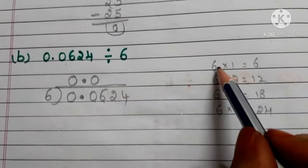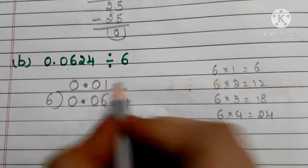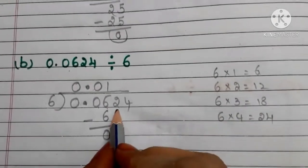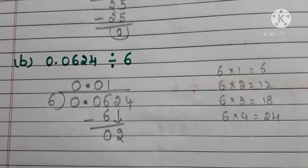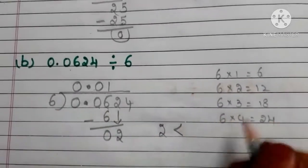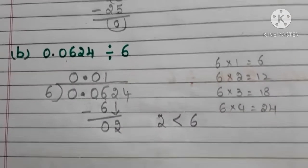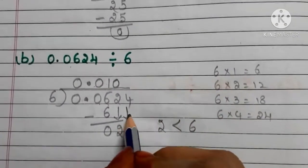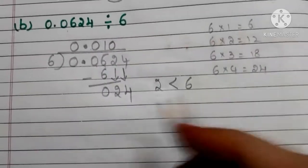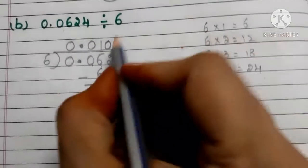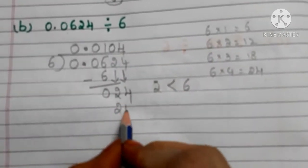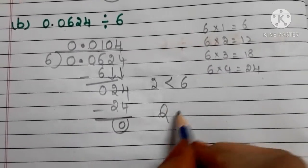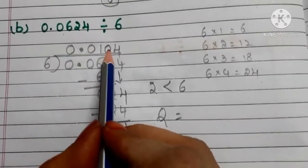Now consider 6. Six 1s are 6, so write 1 in the quotient and 6 below. 6 minus 6 is 0. Now bring down 2. Since 2 is less than the divisor 6, we write 0 in the quotient and bring down the next digit 4, giving us 24. Six 4s are 24, so write 4 in the quotient and 24 below. 24 minus 24 is 0. The quotient is 0.0104.